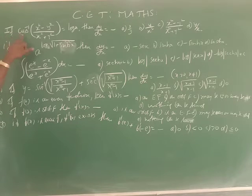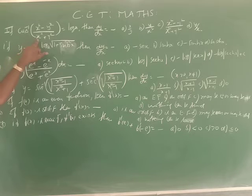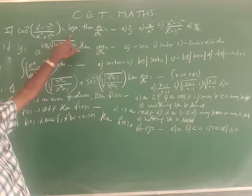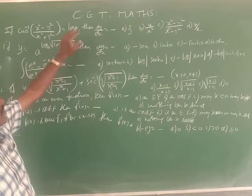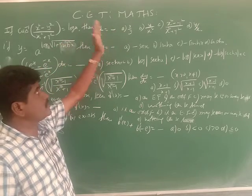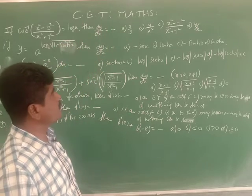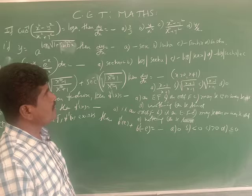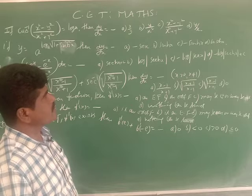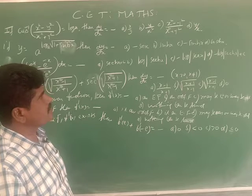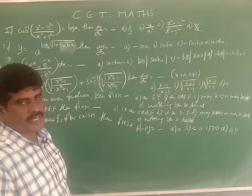If cos of (x² - y²)/(x² + y²) is equal to log a, then dy/dx is equal to: option A x/y, option B y/x², option C (x² - y²)/(x² + y²), option D y/x.